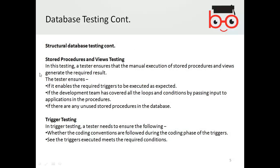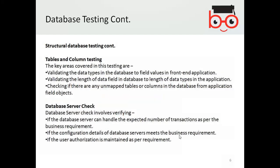Stored procedure and views testing involves testing methods and procedures created inside the database. For example, a count function can give the total number of records in a table — it can be a predefined or user-defined function. Trigger testing checks triggers created in a database to perform particular automated actions. Tables and columns testing validates data tables and fields, checking whether constraints such as unique, primary key, referential integrity, null, and not-null constraints are working correctly.